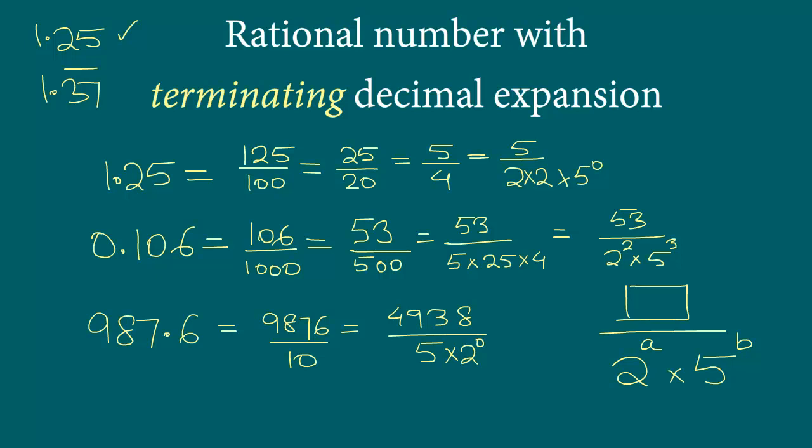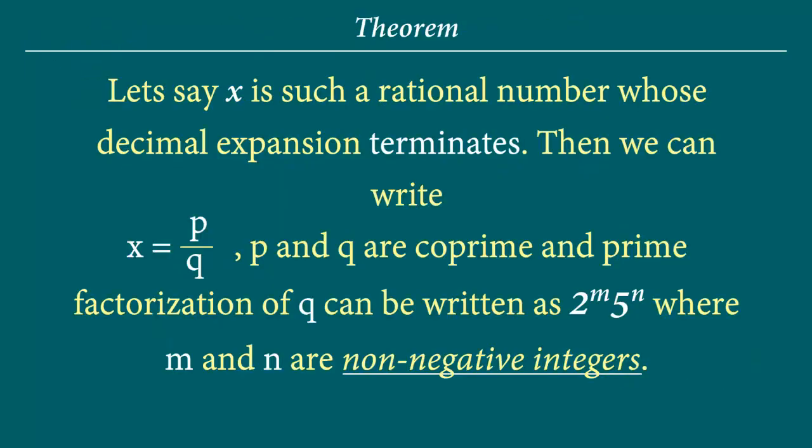This indeed is the theorem. The theorem says that if x is any rational number whose decimal expansion terminates, then if we simplify p and q so that they are coprime—meaning they have no more common factors other than 1—then the prime factorization of q can be written in the form of 2 to the power m times 5 to the power n, where m and n are non-negative integers.